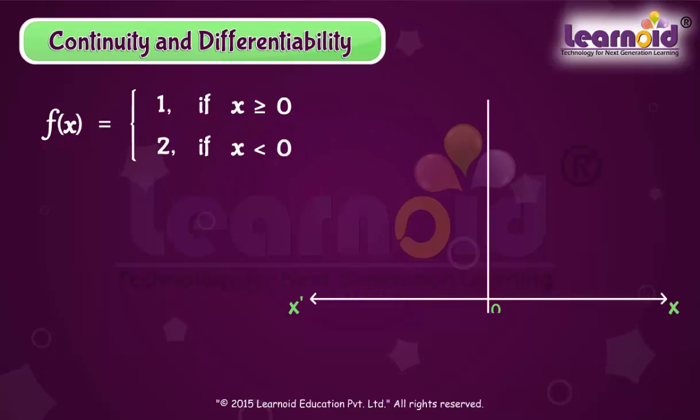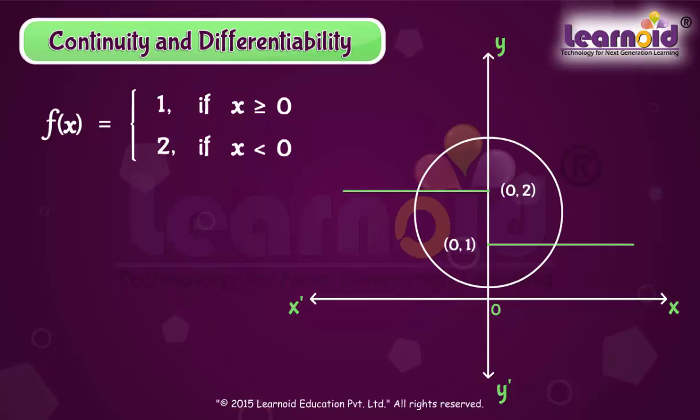For all real values greater than or equal to 0, its value is 1, and for x less than 0, its value is 2. It means it is defined at every point on the real line.